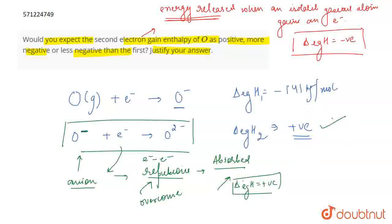That is why the second electron gain enthalpy for oxygen is going to be positive. That's all for the question.